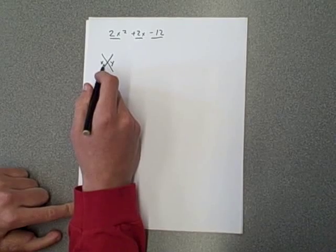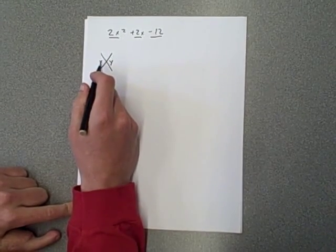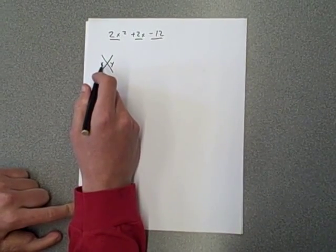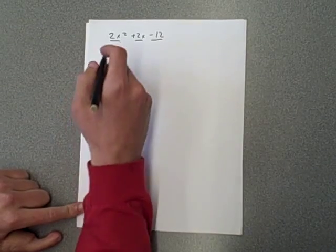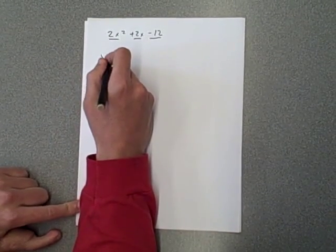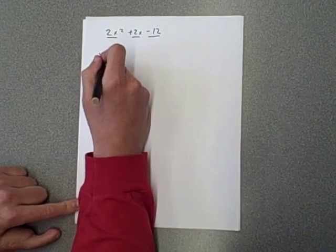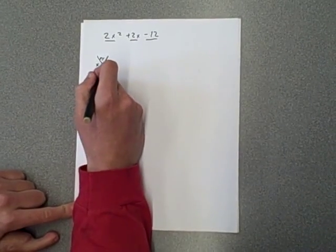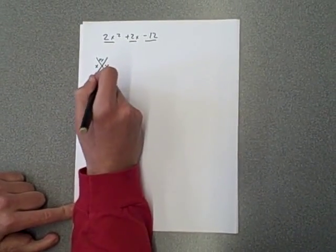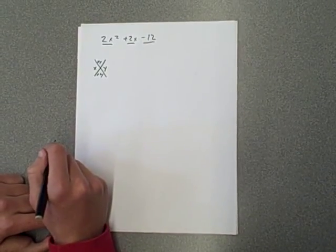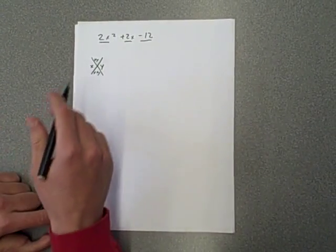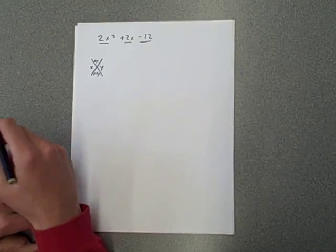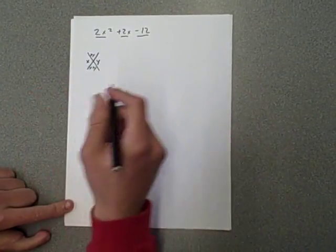First, we'll have to remember that in diamond problems, we learned that x and y on either side multiply together to get xy, and add together to get x plus y. And we're going to use that information to solve this equation and factor it.